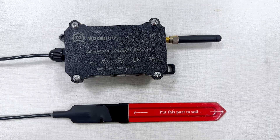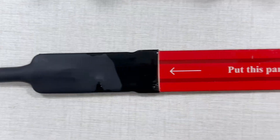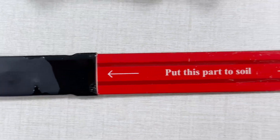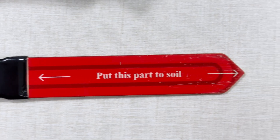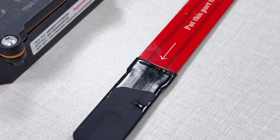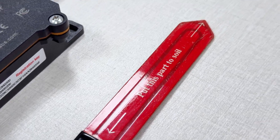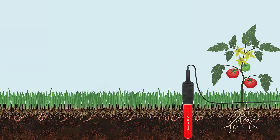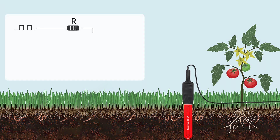This sensor is based on capacitance variations with soil moisture. There is a parallel plate as a capacitor. The capacitance is related to the dielectric constant of the surrounding medium. The moisture content in the soil affects its overall dielectric constant,